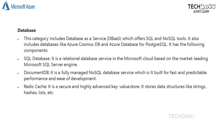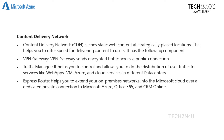Content Delivery Network (CDN) caches static web content at strategically placed locations to offer speed for delivering content to users. Networking components include: VPN Gateway, which sends encrypted traffic across a public connection; Traffic Manager, which controls distribution of user traffic for services like web apps, VMs, and cloud services across data centers; and ExpressRoute, which extends your on-premises networks into the Microsoft cloud over a dedicated private connection to Azure, Office 365, and CRM Online.